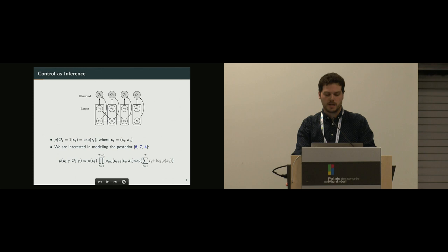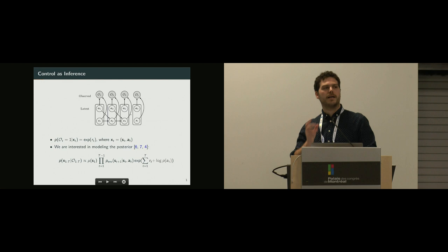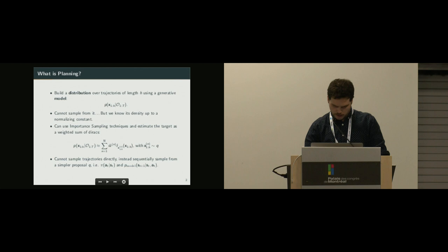So how likely is the trajectory given that you're optimal from the beginning to the end, and this is proportional to the joint, so just how likely a trajectory is and how good it is, so how many rewards you have. We wrote explicitly the prior over actions, but usually people just roll them into the reward function. For example, in MuJoCo, you penalize large actions.